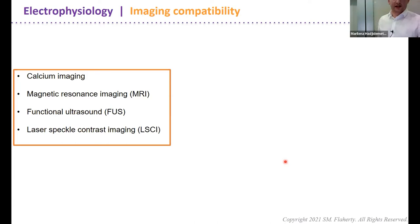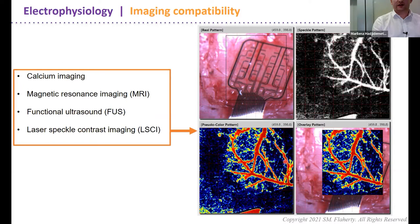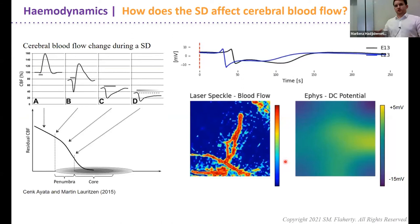Interestingly, these transistors are compatible with many imaging techniques: calcium imaging and MRI, but more importantly for my stroke work, laser speckle contrast imaging for measuring blood flow. In the top left you can see the array on the brain, but if you look at the pseudo laser speckle image, the array is completely invisible — we can image through the array. So combining electrophysiology and blood flow imaging, we can start to tell the bigger story around this.